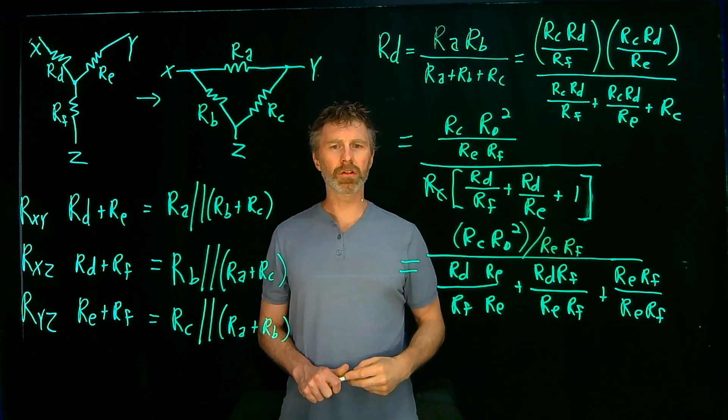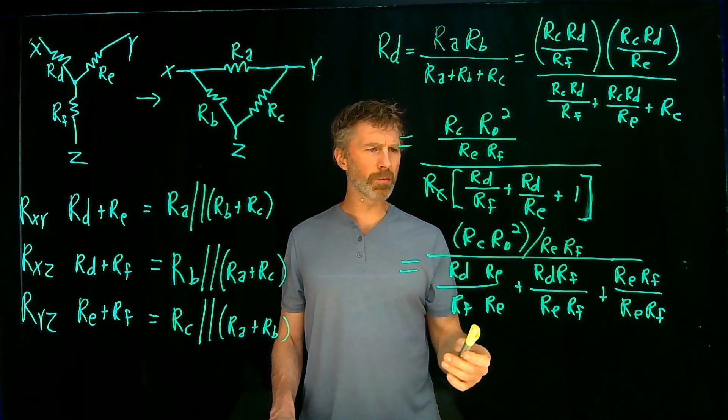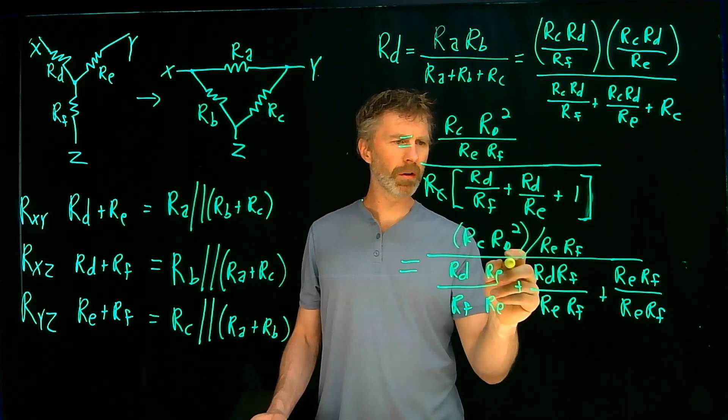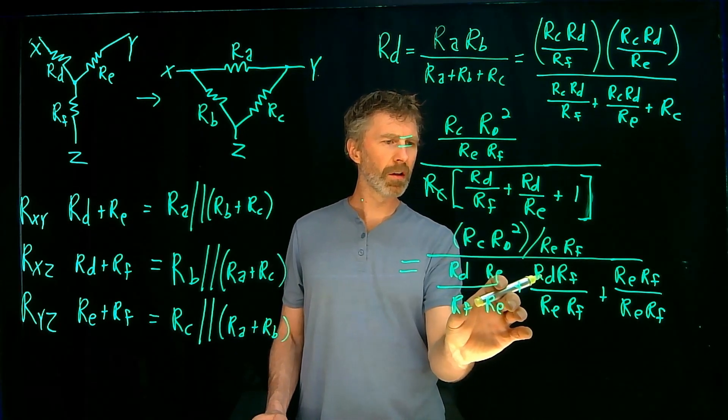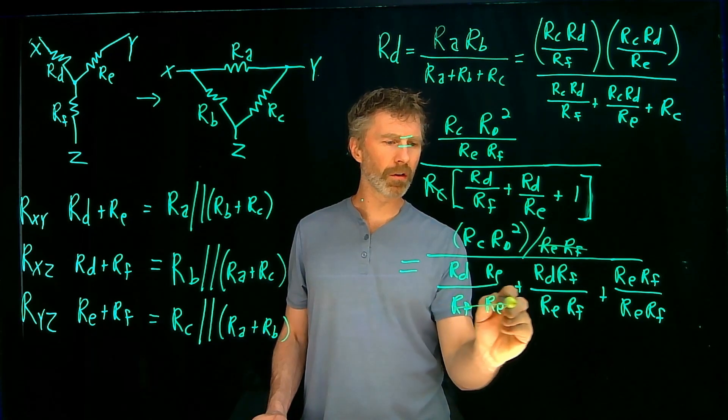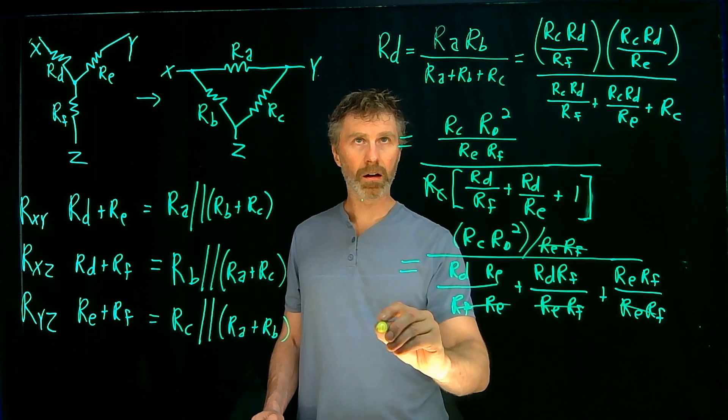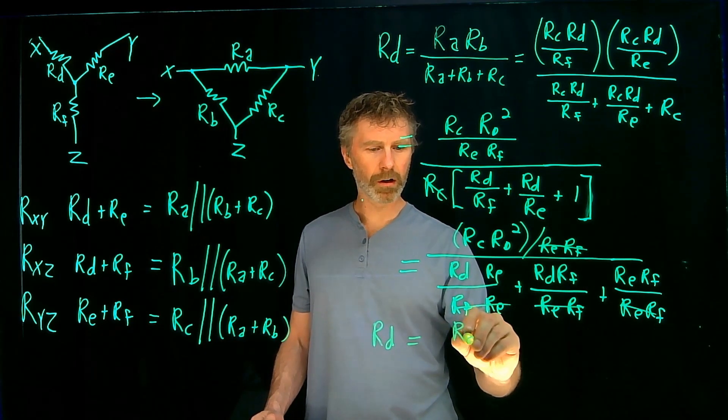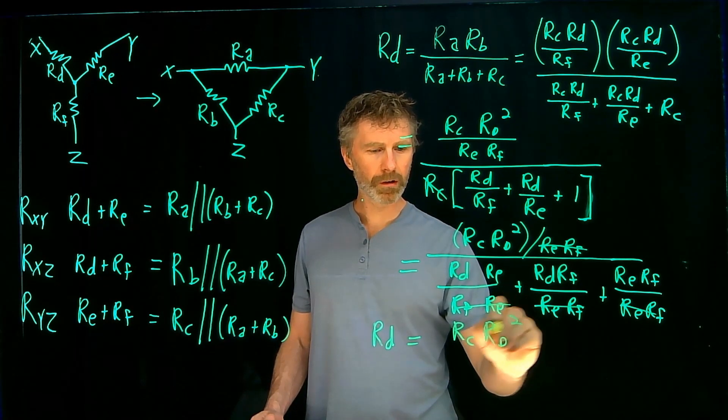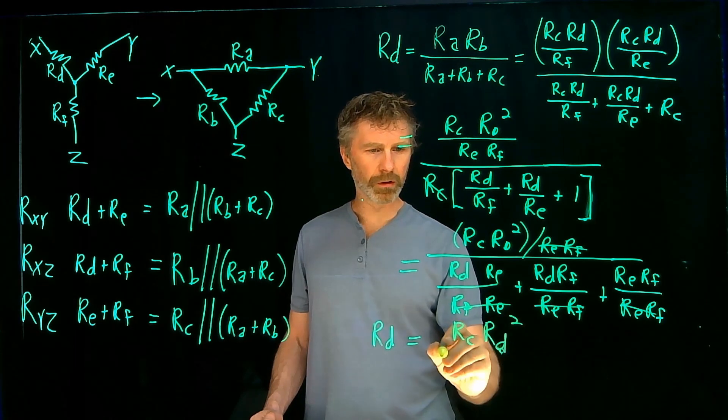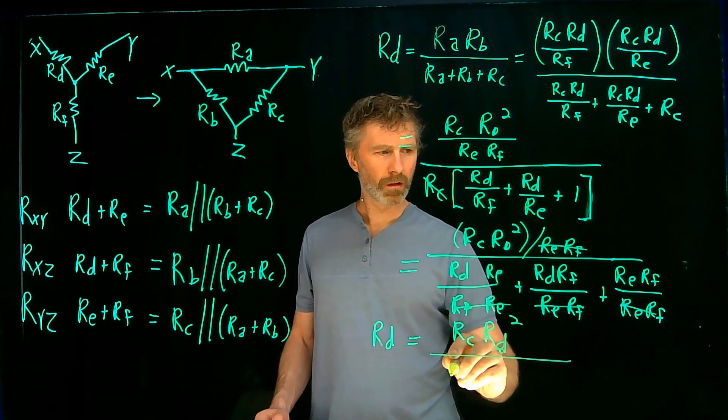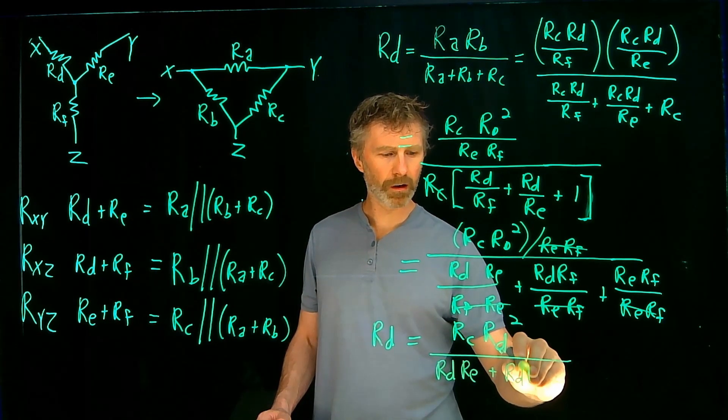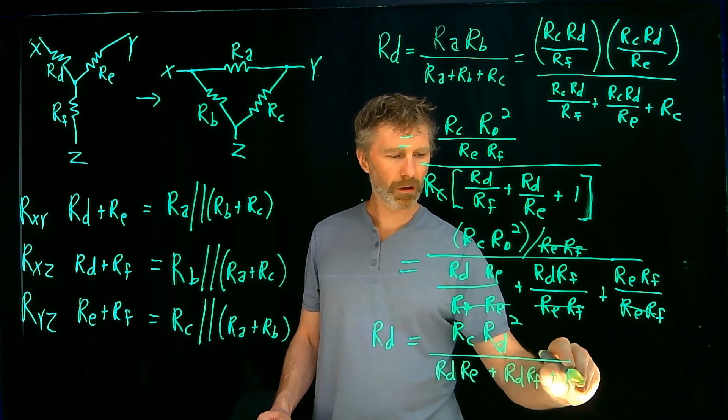So that makes the denominators there the same. And then if I have RE RF over RE RF, that's also equal to one just like that is. I think I missed something when I copied this down. That should be over RE RF. Oh, and now look every single term in this, in this part of the, in this expression has an RE RF in it. So I can actually just get rid of all those. So these RE RFs will all cancel with this RE RF. So those are all go away and I have, what am I down to now? RD is equal to RC RD squared, using lowercase, over RD RE plus RD RF plus RE RF.